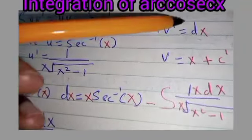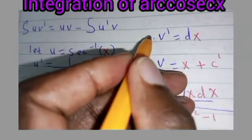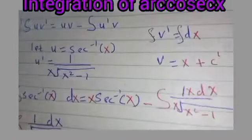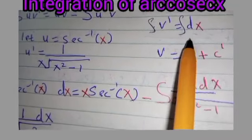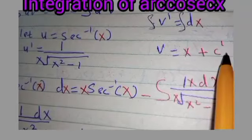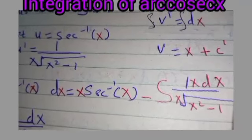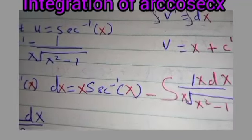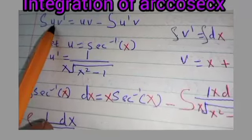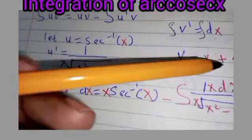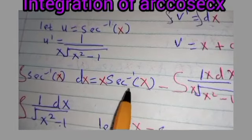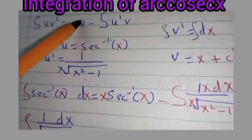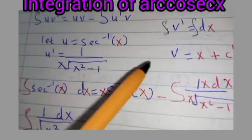Then we let our v' be equal to dx. We integrate both sides: the integral of v' gives us v, and integrating x gives x plus c'. We call this constant c' because there will be another constant later. Substituting into the integration by parts formula — instead of u we have arcsec(x), and instead of v we have x — this gives us x·arcsec(x).